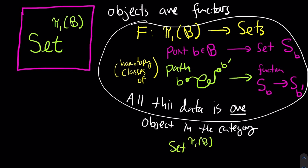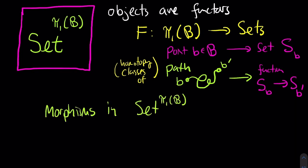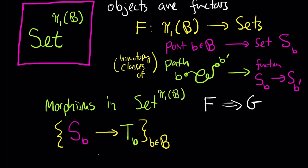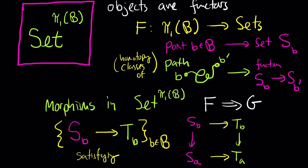What does a morphism in Set^{π₁(B)} look like? Morphisms are natural transformations. A natural transformation from functor F to functor G assigns a function from S_b to T_b for every point b in B — where F assigns sets S_b and G assigns sets T_b. These functions aren't arbitrary; to every path from b to b prime, F gives a function from S_b to S_A, G gives a function from T_b to T_A, and the natural transformation assigns functions from S_b to T_b and S_A to T_A, which must all fit into a commutative diagram.